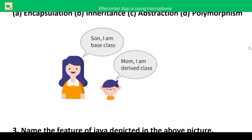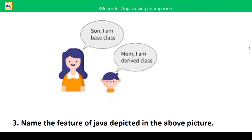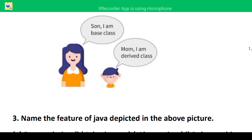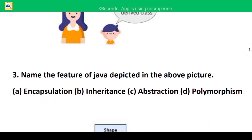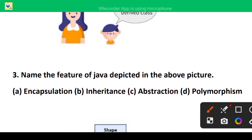Let's go to the third figure. Here you can see a mom and son — mom says 'I'm the base class' and son says 'I'm the derived class.' Base class and derived class come under inheritance. So which Java feature is depicted here? Inheritance is depicted here.